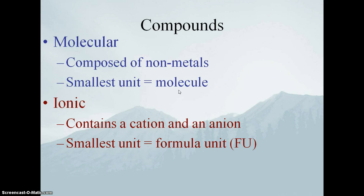The way to think about this is that if I have a bucket of water and I look at the atomic scale, the smallest thing I will see is a water molecule — an individual pairing of one oxygen and two hydrogens. I can clearly say that is a water molecule. Whereas an ionic compound is completely different and has different properties.